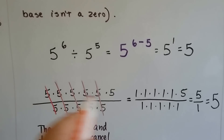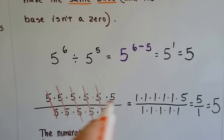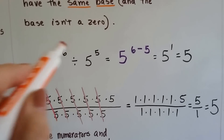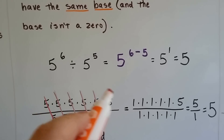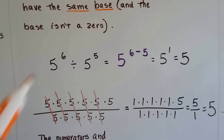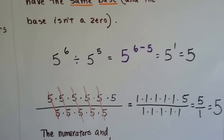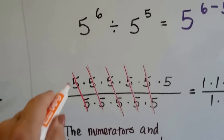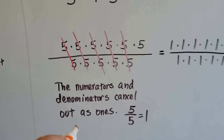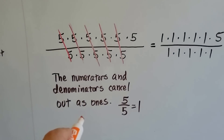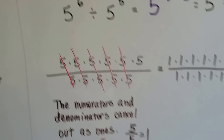Here's how it worked. We put this entire thing as a fraction: 5 to the 6th power — that's six 5's — over 5 to the 5th power — that's five 5's. As you can see, the 5's in the numerator and denominator cancel out as 1's. 5 over 5 equals 1.